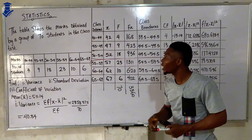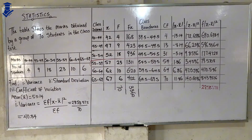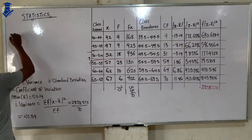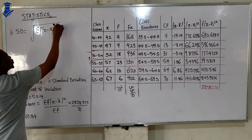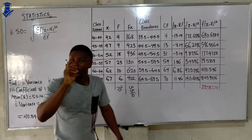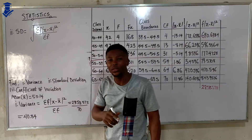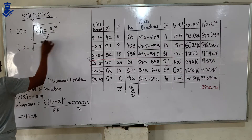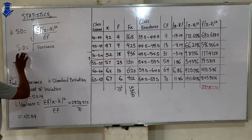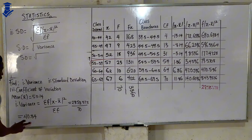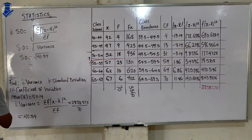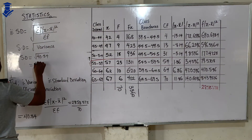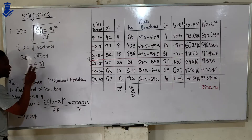Now we find the standard deviation. The formula is the square root of summation f times (x minus x-bar) squared over summation f — notice the expression inside the square root is exactly the variance formula. So standard deviation equals the square root of variance: square root of 40.84 equals 6.39.